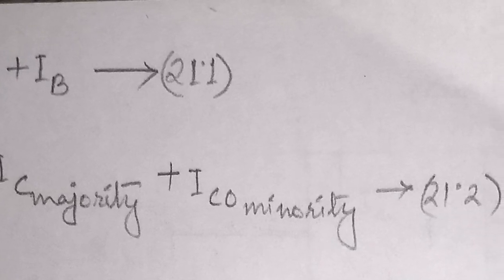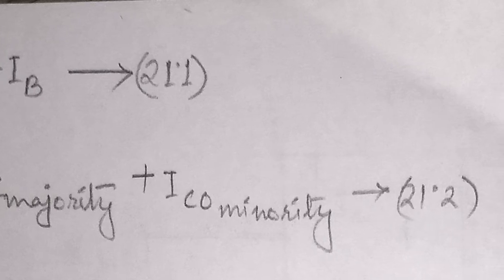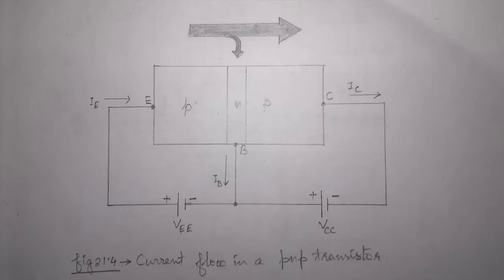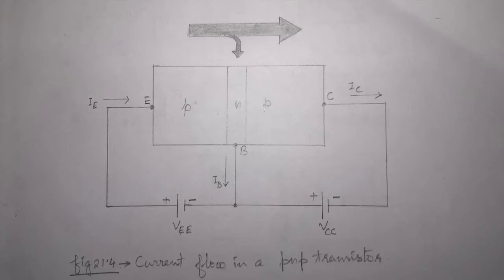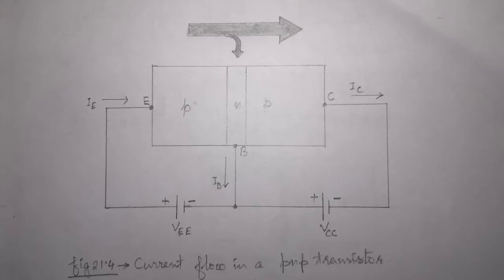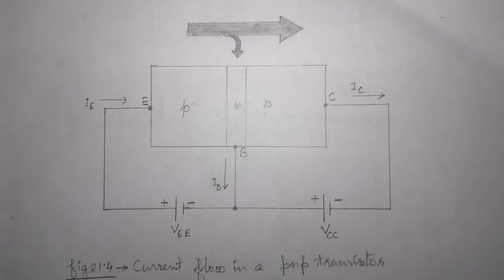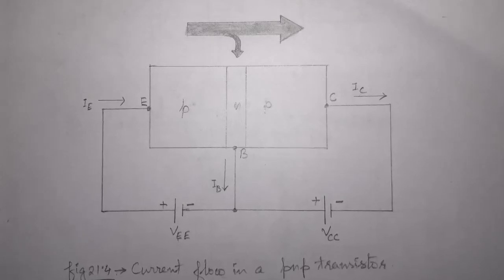The minority current component is called leakage current, denoted by the symbol ICO. Therefore, the collector current is given by equation 21.2. The leakage current ICO is same as reverse saturation current IS in the case of a diode.